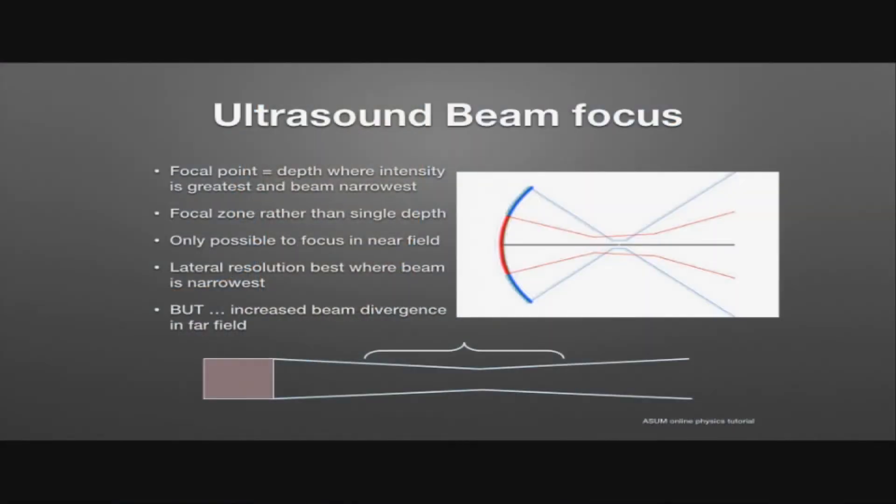Both the axial and the lateral resolution is going to be best where the beam is at the narrowest. But we have to consider that we're going to get increased beam divergence as we go into the far field if we increase the zone of focus. And that's tried to explain in the higher of the two diagrams there, where the focal zone is longer for the transducer in the red versus the transducer in the blue, which has a smaller beam width. So it's going to have better lateral resolution. However, we're going to get greater beam divergence happening in the far field.